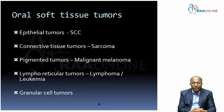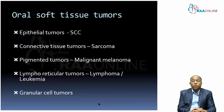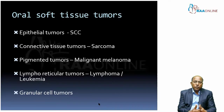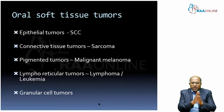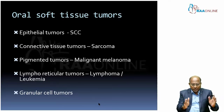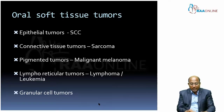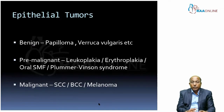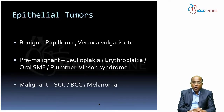Then you have lymphoreticular tumors, which are blood cell related and can also affect the oral cavity — lymphomas, leukemias, and granular cell tumors. Broadly speaking, these are the classifications of tumors occurring in and around the oral cavity or the head and neck region.